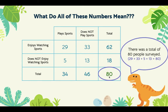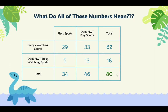Looking at this 80, there are a total of 80 people surveyed. To find that, you can add these four numbers together: 29 plus 33 plus 5 plus 13 equals 80. There are other ways you can find this number, which we'll talk about shortly.